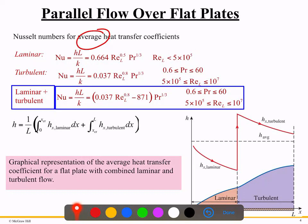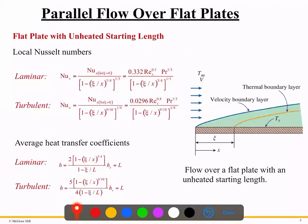If an exam problem has both laminar and turbulent sections — meaning the plate is long enough that you cannot ignore either region — you must consider both. In that case, there is a combined Nusselt number formula that accounts for both laminar and turbulent conditions across the plate. This concludes the first part; in the next video we will discuss additional aspects of flow over flat plates.